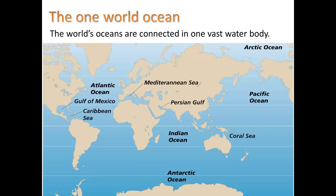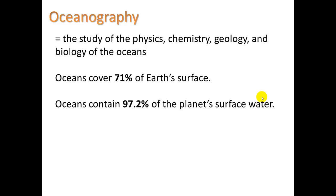Let's start with ocean geology. The world really is one ocean, and we call different regions by different names — Arctic Ocean, Pacific Ocean (the largest), etc. Oceanography means the study of the physics, chemistry, geology, and biology of the oceans. Oceans cover 71% of Earth's surface, roughly three-fourths, and contain 97.2% of the planet's surface water — a number you should be familiar with for APES.